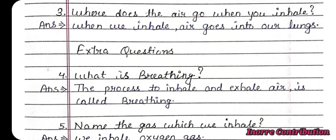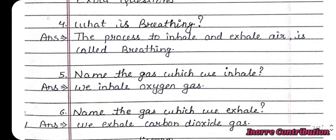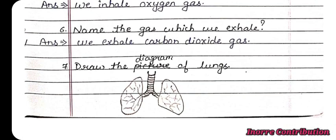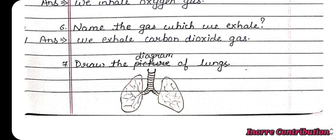Extra question: What is breathing? Answer: The process to inhale and exhale air is called breathing. Fifth: Name the gas which we inhale — we inhale oxygen gas. Sixth: Name the gas which we exhale — we exhale carbon dioxide gas. Now here is the diagram of lungs. Thank you.